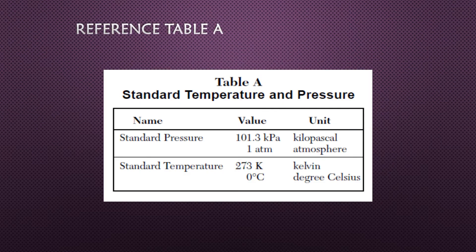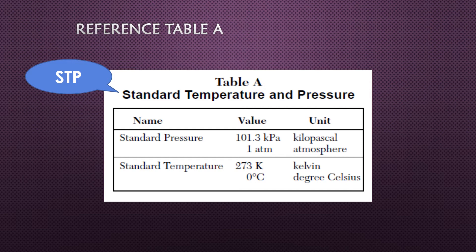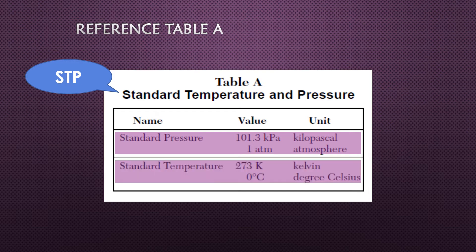The first thing we need to discuss for this chapter is STP, which we've been looking at since the past few chapters. STP stands for Standard Temperature and Pressure. The value for standard pressure is one atmosphere or 101.3 kilopascals — so one atmosphere equals 101.3 kilopascals. Standard temperature is zero degrees Celsius or 273 Kelvin.